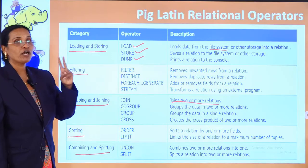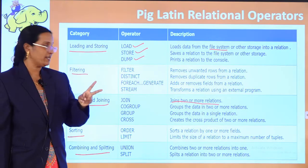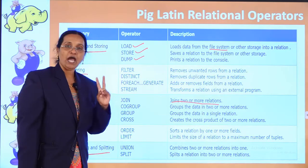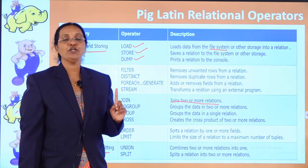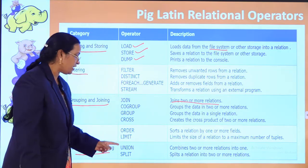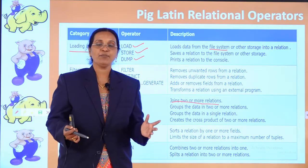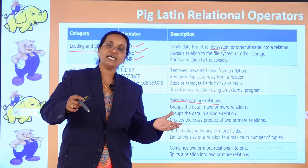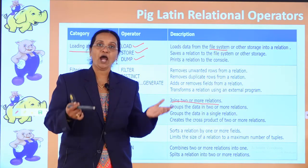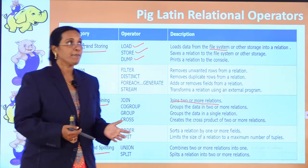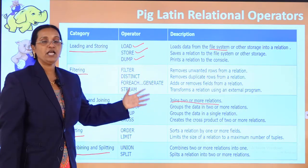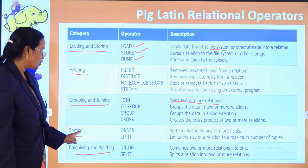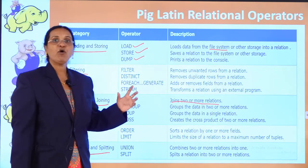In the combining and splitting category, we have UNION and SPLIT. UNION combines two or more relations into one. SPLIT splits a relation into two or more relations — for example, salaries greater than ten thousand in one relation and less than ten thousand in another. These are the relational operators categorized under five groups.